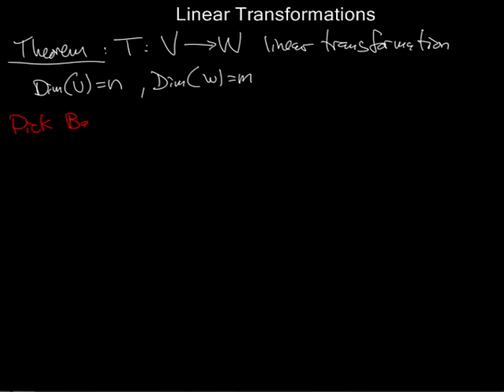And suppose the dimension of V is n and W is m-dimensional. Now the key point is you have to pick bases of these two vector spaces. So you pick a basis of the first one, V1 through Vn, and basis W1 through Wm of the second vector space.